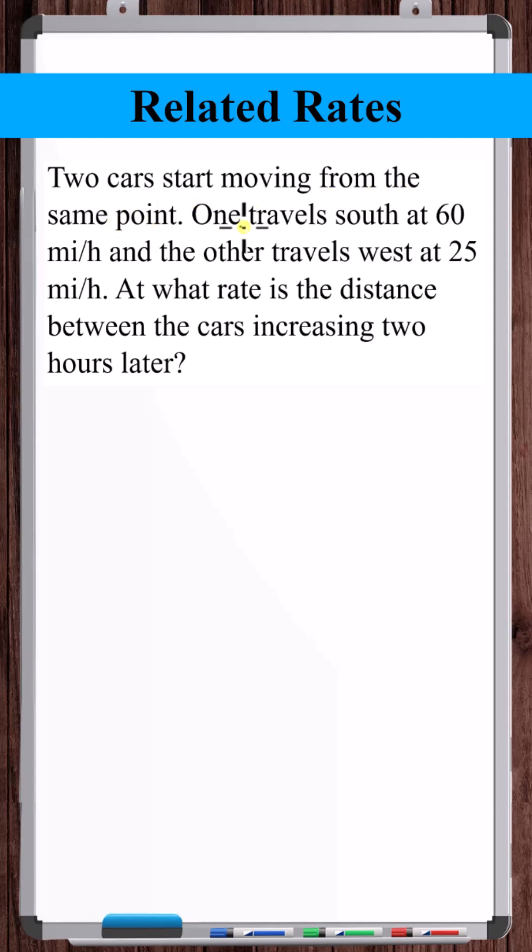Two cars start moving from the same point. One travels south at 60 miles an hour and the other travels west at 25 miles an hour. At what rate is the distance between the cars increasing two hours later?